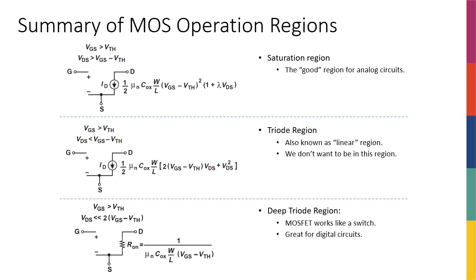Okay, so let's summarize things. This is a summary of MOS operation regions. We have three operation regions here. There's another, a fourth one that I haven't mentioned here, which is when the transistor is actually off.